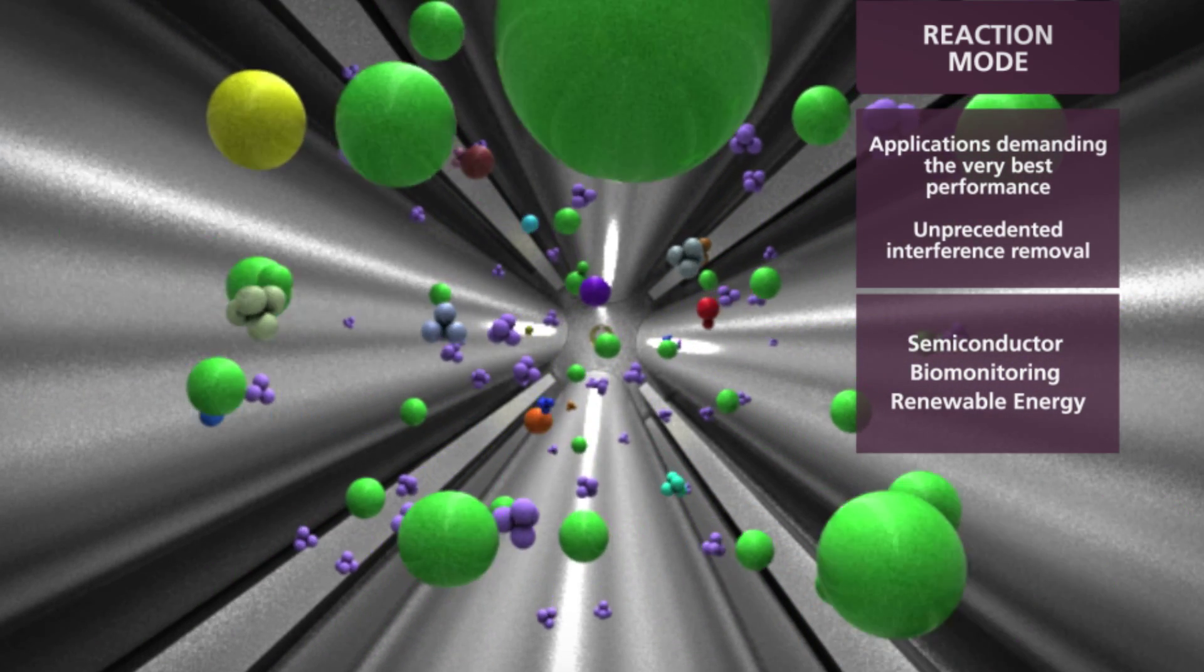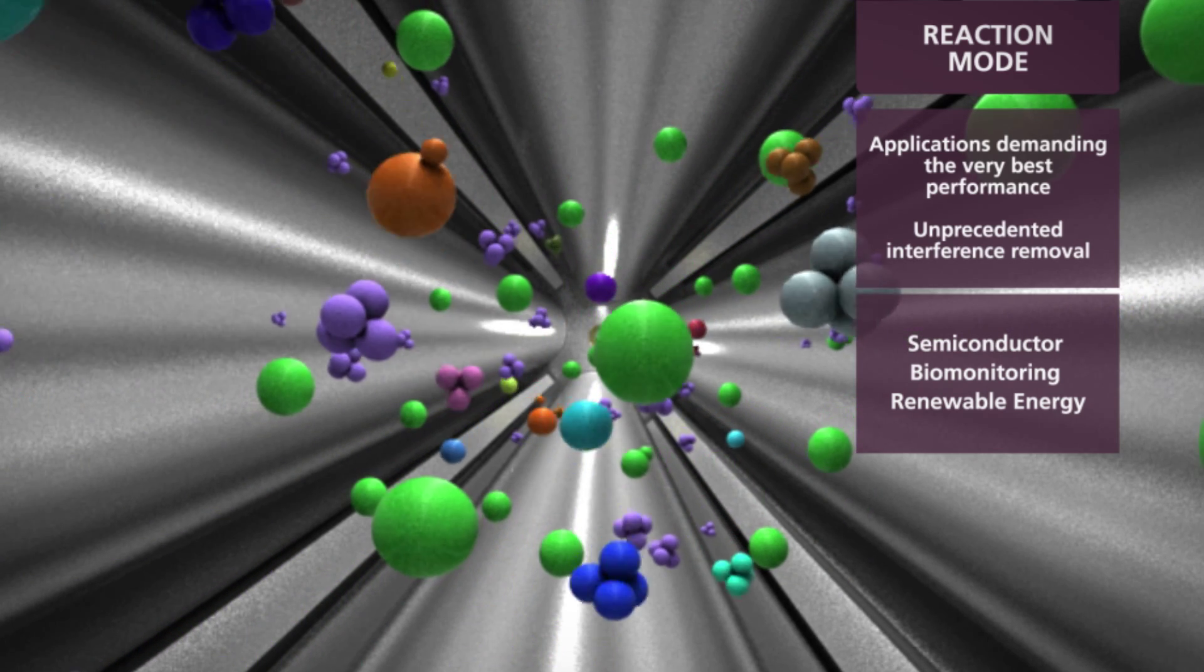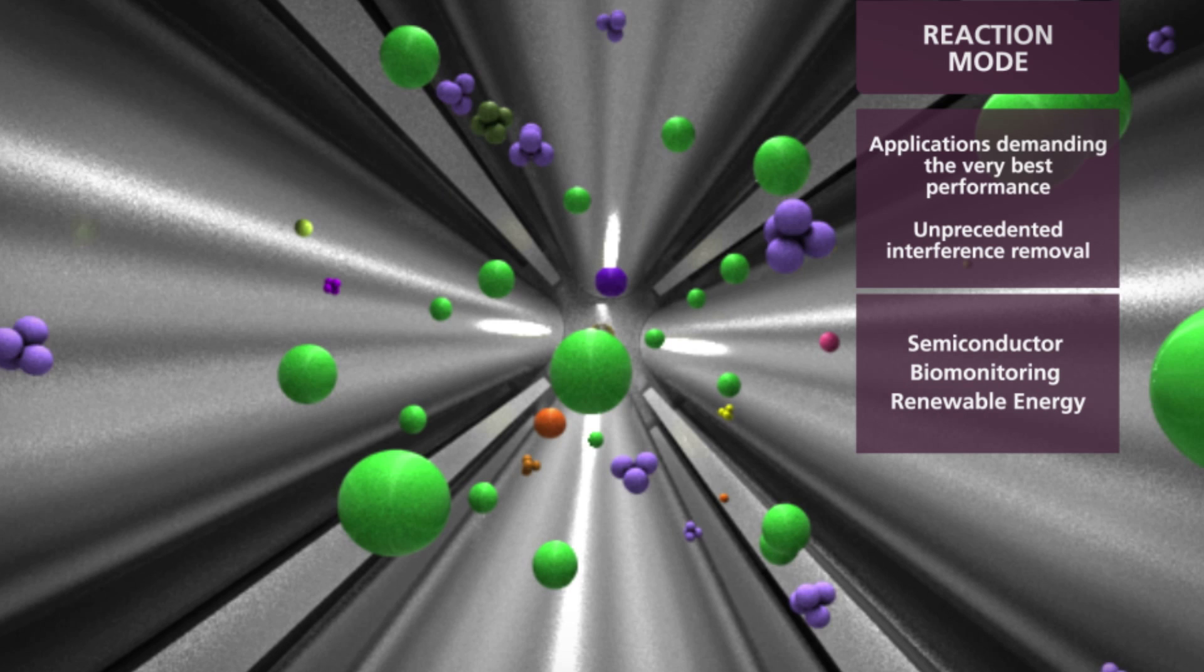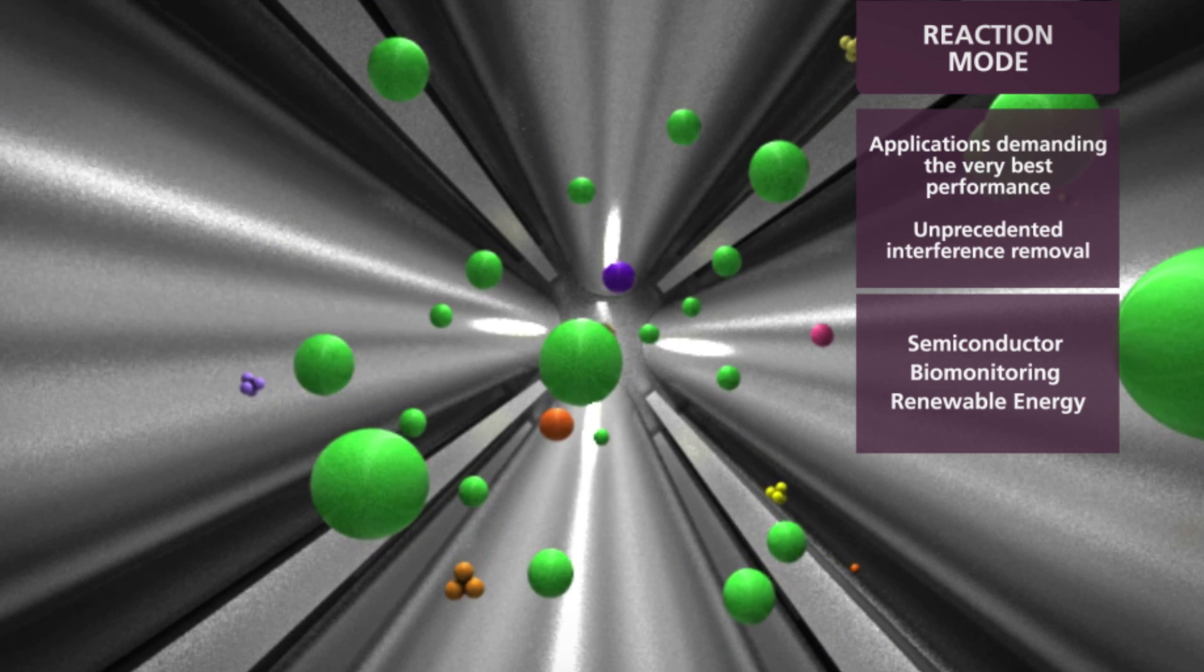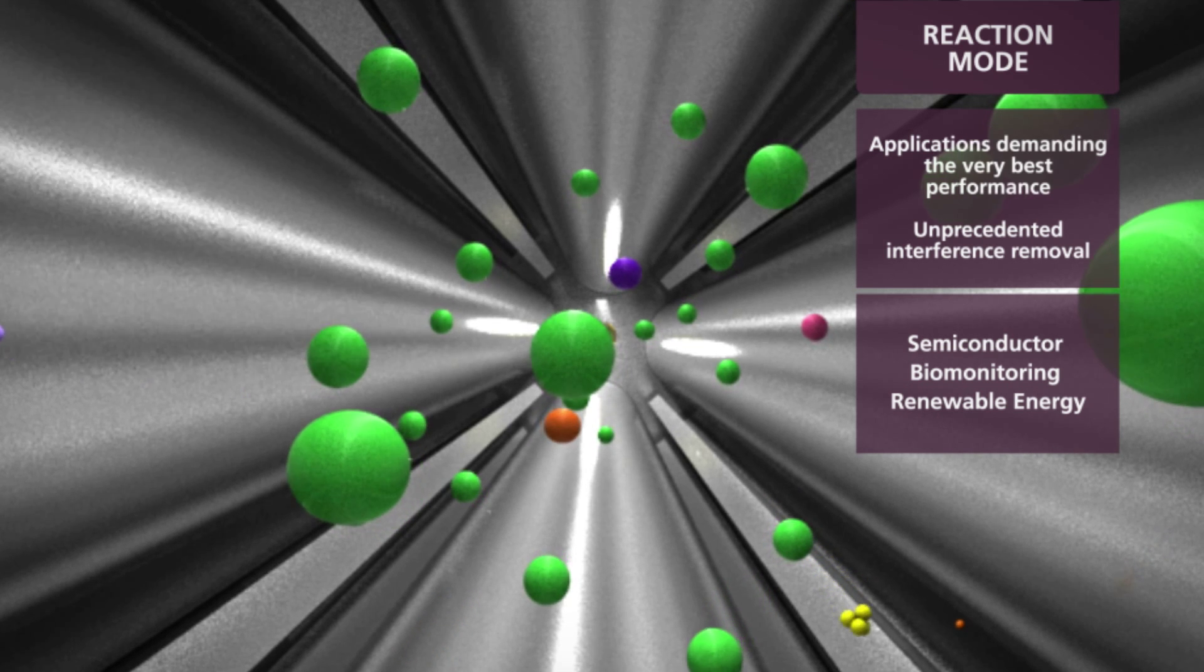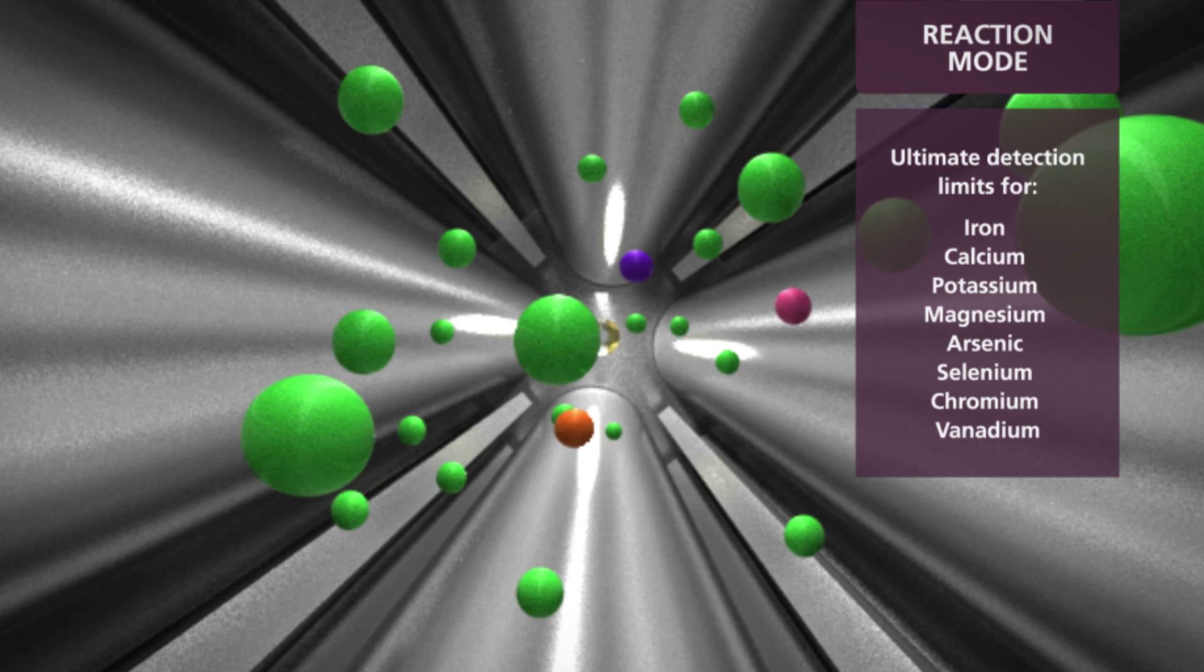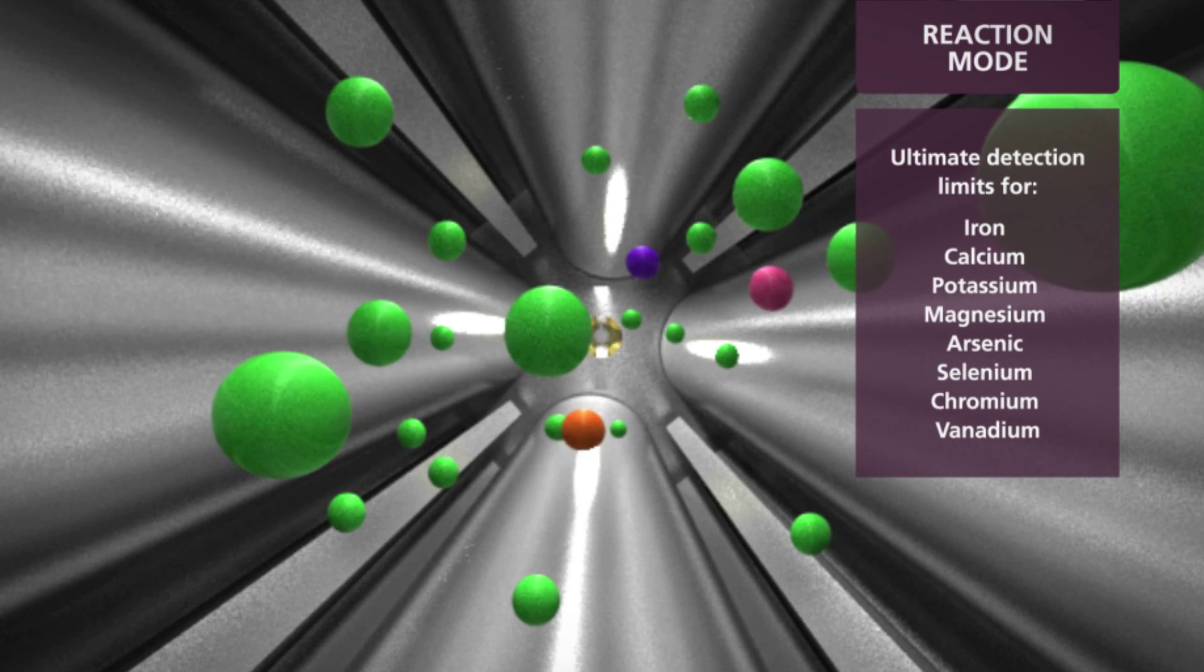Patented dynamic bandpass tuning prevents the formation of new interferences. By using a scanning quadrupole inside the universal cell, all reactions can be anticipated, and only the element of interest is passed to the analyzing quadrupole. Any other byproducts of the reactions in the cell are instantly removed by the quadrupole. The universal cell in reaction mode is ideal for achieving the ultimate detection limits required by industries ranging from biomonitoring to semiconductor manufacturing.